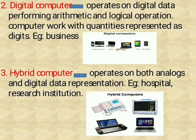Digital Computer: the digital computer operates on digital data, performing arithmetic and logical operations. The computer works with quantities represented as digits. For example, business purpose. Hybrid Computer: the hybrid computer operates on both analogous and digital data. For example, hospitals and research institutions.